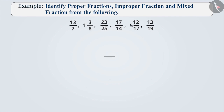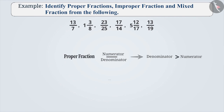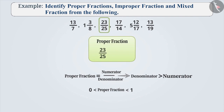Whenever the value of the denominator is greater than the numerator, then it is a proper fraction. The value of this fraction is greater than 0 but less than 1. So, among the given numbers, 23 by 25 and 13 by 19 are proper fractions.